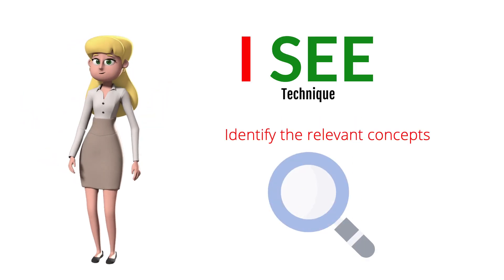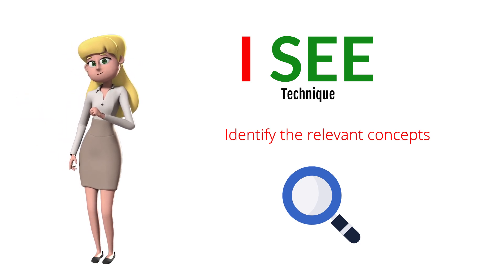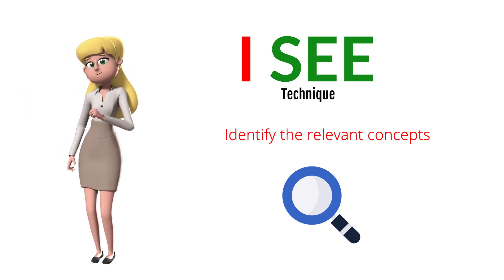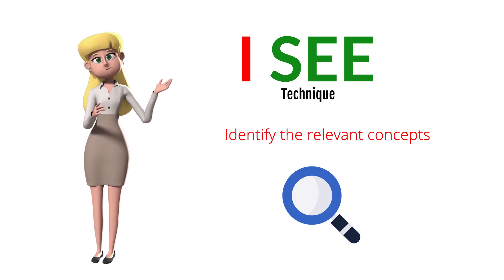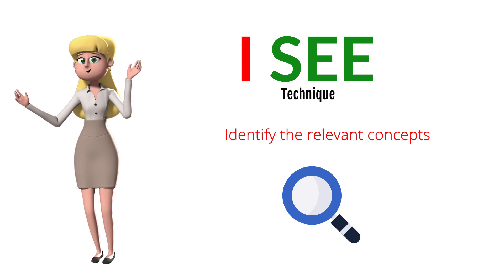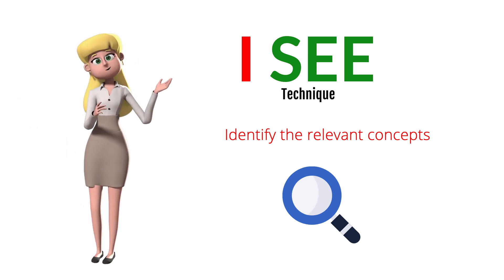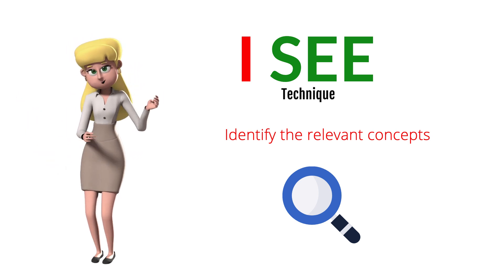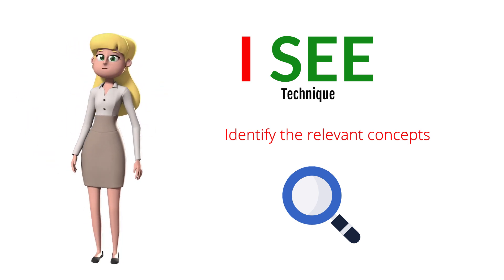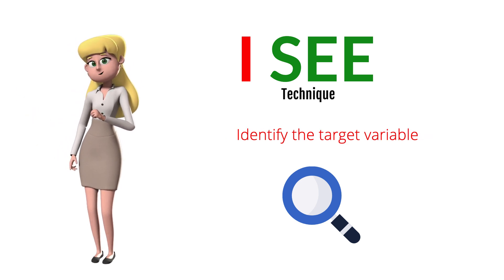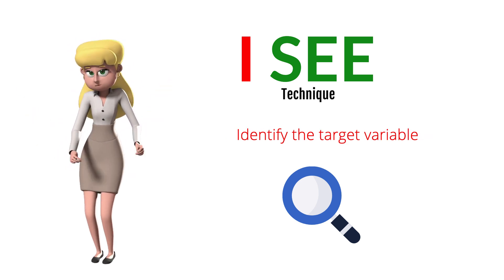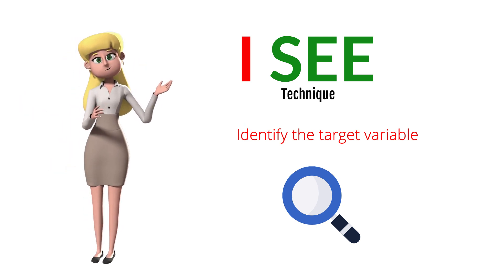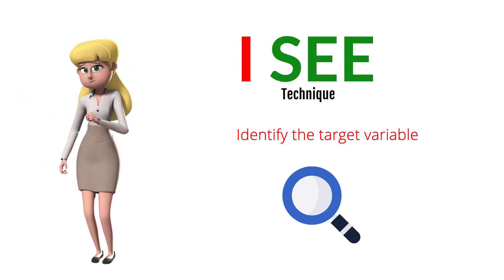Letter I: Identify the relevant concepts. First, decide which physics ideas are relevant to the problem. Although this step doesn't involve any calculations, it's sometimes the most challenging part of solving the problem. Don't skip over this step though. Choosing the wrong approach at the beginning can make the problem more difficult than it has to be, or even lead you to an incorrect answer. At this stage you must also identify the target variable of the problem, that is, the quantity whose value you're trying to find. The target variable is the goal of the problem solving process. Don't lose sight of this goal as you work through the solution.